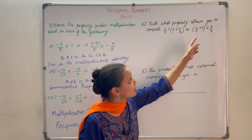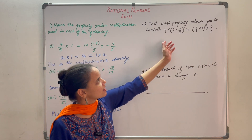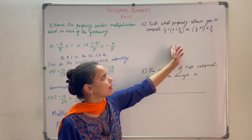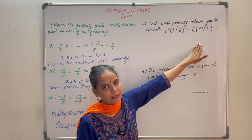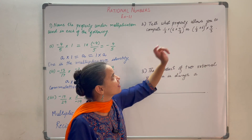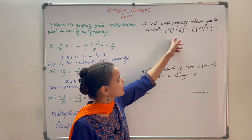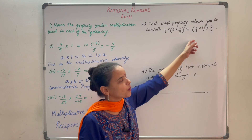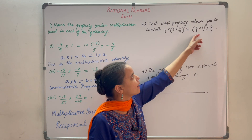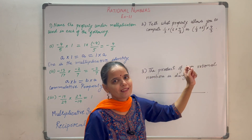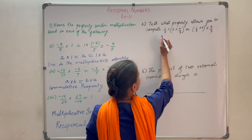Now let us discuss the second question: tell what property allows you to compute this as this. Here three rational numbers are multiplied. In the second form, the same three rational numbers are multiplied but the grouping is changed. Here we are multiplying 6 to 4 by 3 and then the result is multiplied to 1 by 3. In the other form, 1 by 3 is multiplied to 6 first and then the result is multiplied to 4 by 3. This is the associative property.